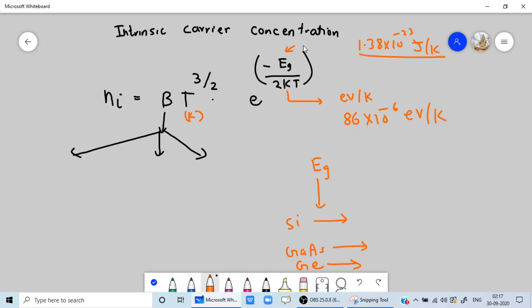In this video we will see intrinsic carrier concentration calculation using the formula ni equals BT raised to 3/2 into e raised to minus Eg by 2kT. Here B is the semiconductor coefficient, it depends upon the semiconductor we are using, and then we have temperature in Kelvin.